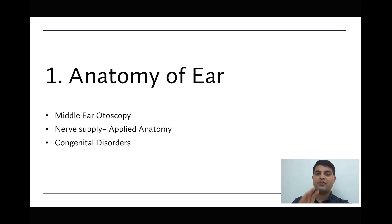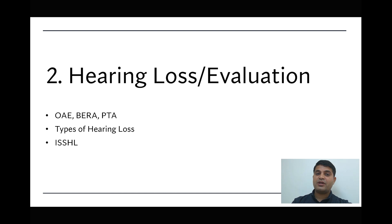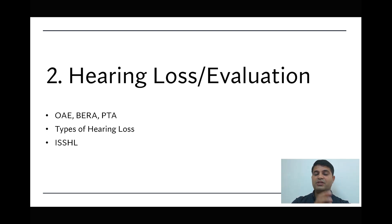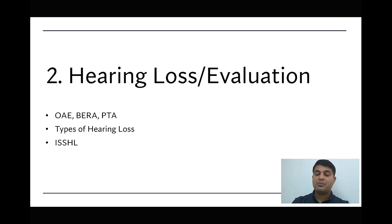This covers topic number one — anatomy of ear. Coming to the second topic, which is hearing loss and its evaluation. You must know all important causes of conductive versus sensorineural hearing loss. For evaluation, otoacoustic emissions, BERA, and interpretation of pure tone audiometry are important topics. Nowadays, sudden sensorineural hearing loss — also known as idiopathic sudden sensorineural hearing loss — is important, particularly in the post-COVID era with thromboembolism in the territory of the labyrinthine artery.